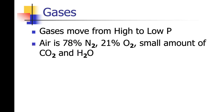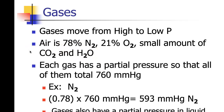When we think about the actual composition of air, air is about 78 percent nitrogen, 21 percent oxygen, and a small amount of CO2 and water. Each gas has a partial pressure so that all of them total our 760 that we saw as being normal. For example, nitrogen is 78 percent of the air, so 0.78 times 760 makes the partial pressure of nitrogen 593.